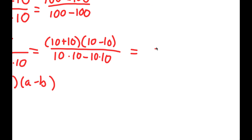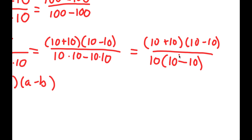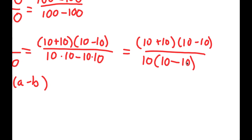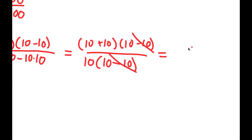And now this is the same thing as 10 plus 10 times 10 minus 10, over — for my denominator, I'm going to factor out 10. If I factor out 10, I get 10 times 10 minus 10, because 10 times 10 divided by 10 is simply 10. So I have 10 times 10 minus 10 in the denominator. Now I'm going to cancel out these two 10 minus 10 terms, and I get 10 plus 10 over 10.